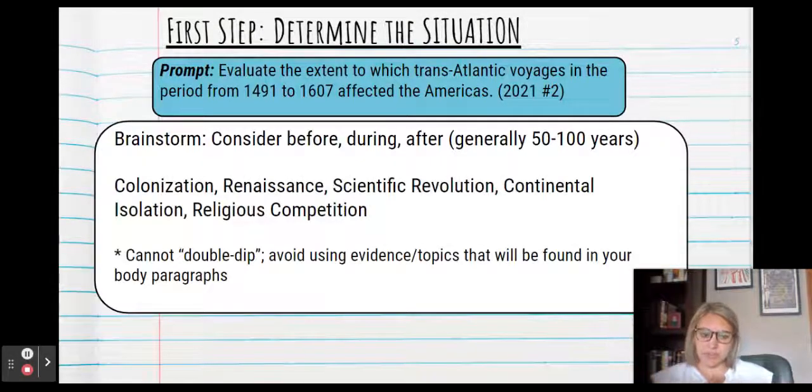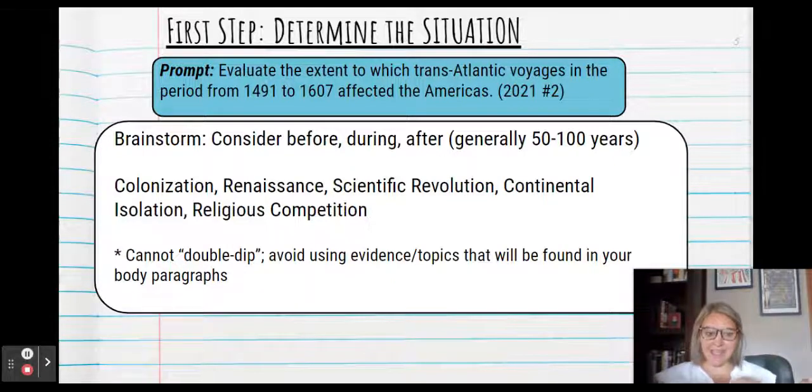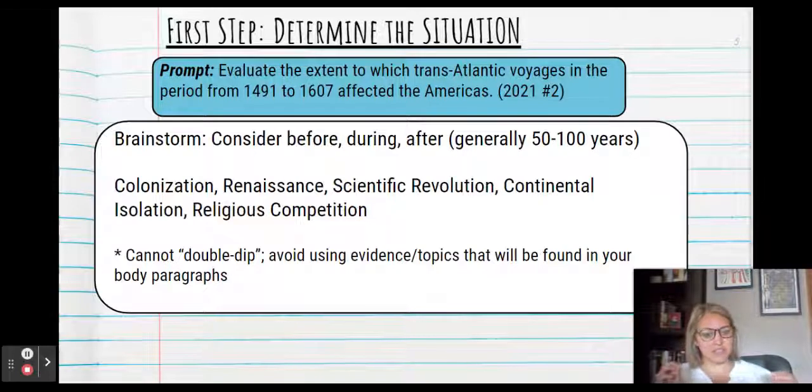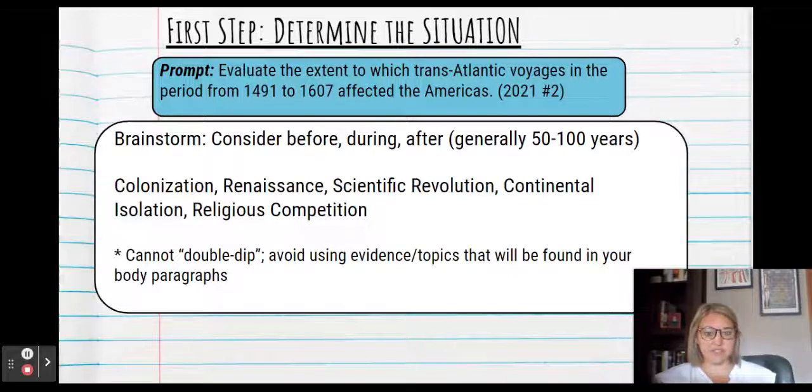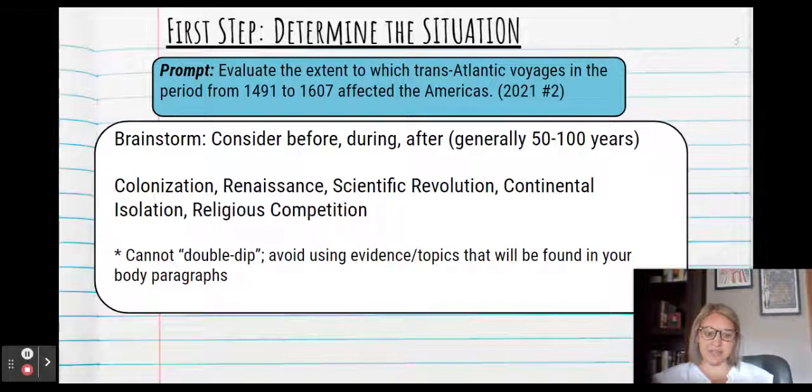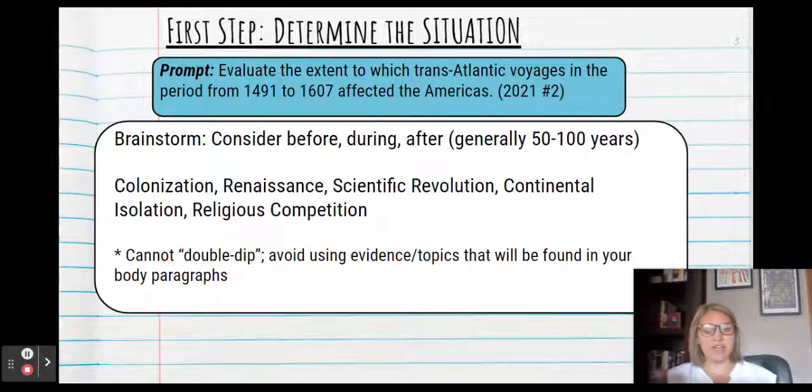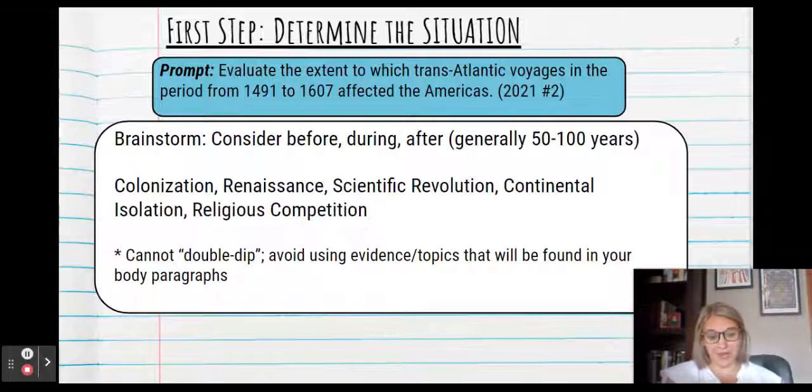Okay. So things to remember, you cannot double dip, which means you cannot earn a point twice. You can't earn a point for evidence and also use the same material to earn the contextualization point. So you must avoid using evidence or topics that will be found in your body paragraphs. So for example, when students write this essay, they often talk about the Columbian exchange. So if your evidence in your body paragraph is going to be the Columbian exchange, you cannot also use Columbian exchange as your contextualization. So it's really important to know what you're going to write about in your body paragraphs before you come up with your contextualization.